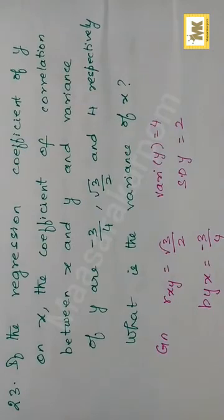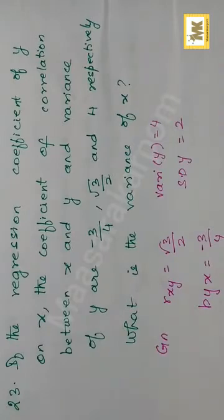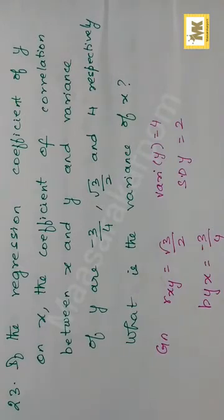Question number 23. If the regression coefficient of y on x, the coefficient of correlation between x and y, and the variance of y are minus 3 by 4, root 3 by 2, and 4 respectively, what is the variance of x?